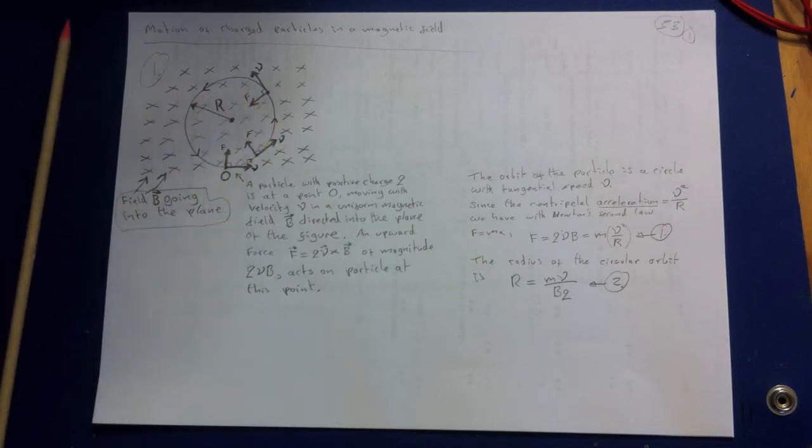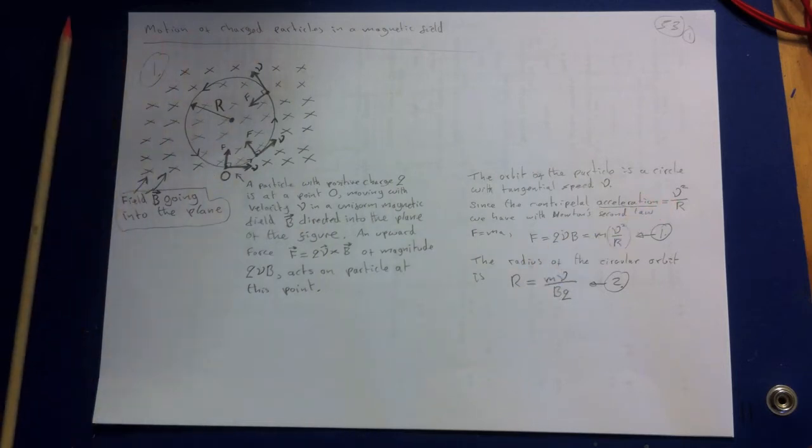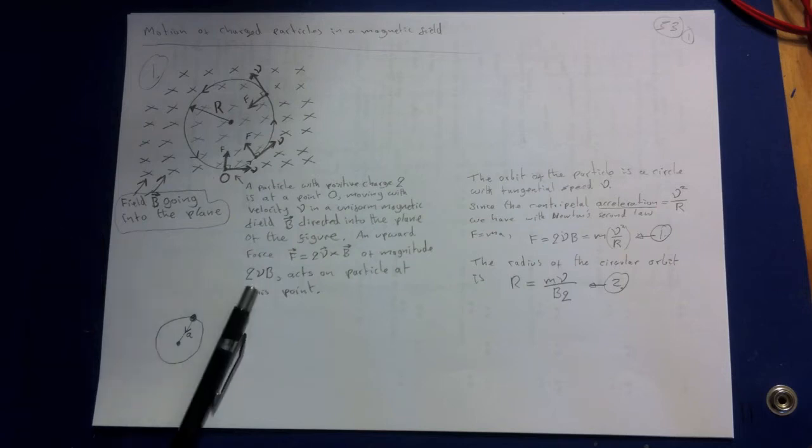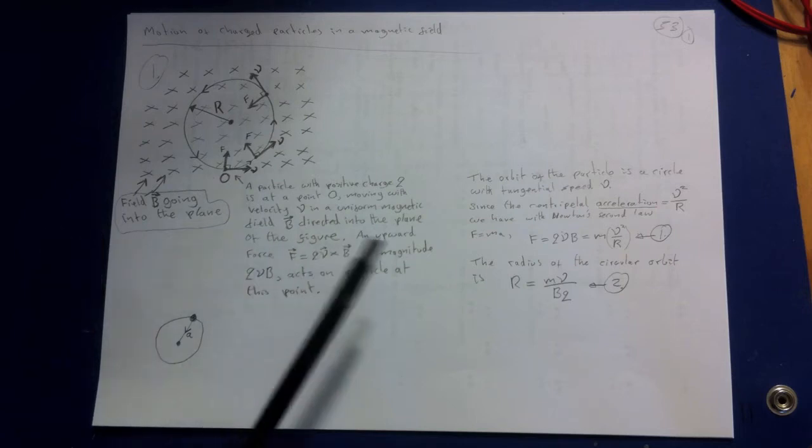The orbit of the particle is therefore a circle described with constant tangential speed V. Since the centripetal acceleration equals V squared over R, and we have from Newton's second law that F equals mass times acceleration,